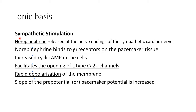On sympathetic stimulation, norepinephrine is released at the nerve endings of the sympathetic cardiac nerves and binds to beta-1 receptors on the pacemaker tissue. This leads to an increase in cyclic AMP in the cell, which facilitates the opening of L-type calcium channels, leading to rapid depolarization of the membrane. As a result, the slope of the pre-potential is increased, leading to more action potentials or impulses produced per minute and therefore an increase in heart rate.